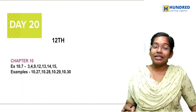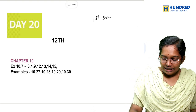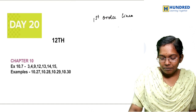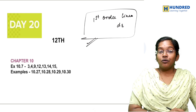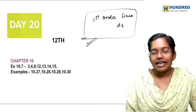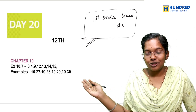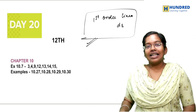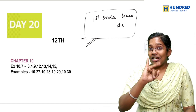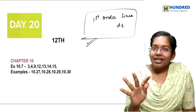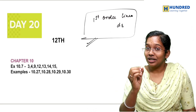For 12th standard students, 10.7 is the first order linear differential equation — complete the sums. Also, 10.8 exercise example sums — complete examples 10.27, 28, 29, 30. Chapters 5, 9, and 10 of the 10th chapter are super easy — you can fix it.